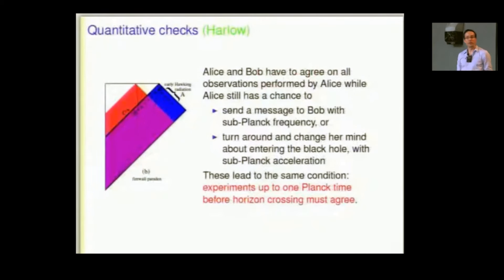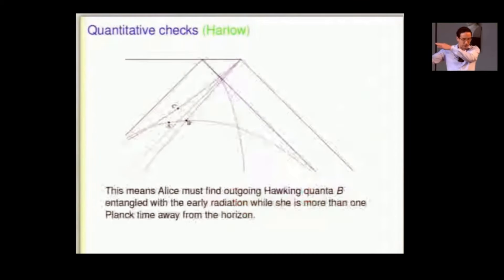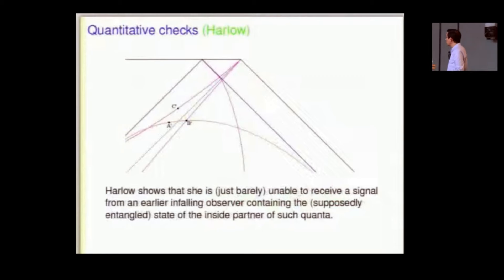And so experiments, it turns out, up to one Planck time before Alice's freefall hits the horizon, those experiments have to agree between the two observers. And so that seems problematic because it seems like, and this is what Dan checked, it seems like Alice could measure the quantum B needed to be not entangled with A so that she later sees C and can find it entangled with B. But on the other hand, she could still turn around, in which case B should be entangled with A because she becomes an outside observer at the end and sees that unitarity should hold. But in fact, there is no contradiction.